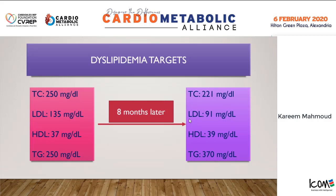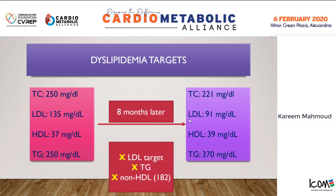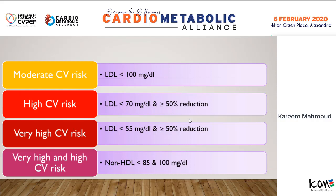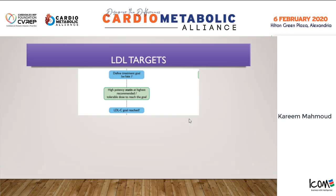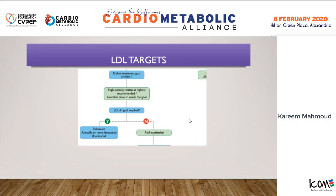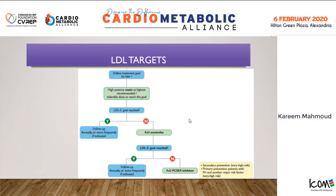Regarding lipid profile, this patient has a very poor lipid profile and is not achieving his LDL target, HDL, non-HDL target, nor triglyceride target. For LDL, being very high risk, he should have LDL less than 55 mg/dL with more than 50% reduction, and non-HDL cholesterol less than 85 mg/dL. To achieve this, we start high-intensity statin — rosuvastatin 20–40 mg/day or atorvastatin 40–80 mg/day. If target is not reached, add ezetimibe, then if still not reaching target, add a PCSK9 inhibitor.